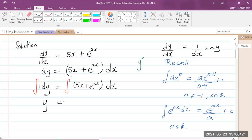...to x, what would we get? Well, we have to add one to the power. Let me just write that over here: we're finding the integral of (5x plus e to the 2x) with respect to x. So we're adding one to the power, so that will become 2, and divide by the power 2.